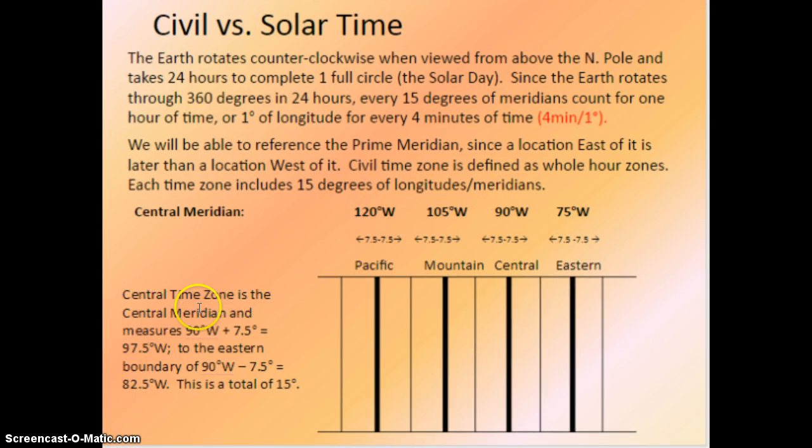Our central time zone is the central meridian, and it measures 90 degrees west. So here's our central time zone. But our entire time zone incorporates 90 degrees west, plus 7.5 to the west, and minus 7.5 degrees to the east. So really, we look at our boundaries of the central meridian as 97.5 degrees west to 82.5 degrees west, which both of these are west of the prime meridian, which is a total of 15 degrees. And that's where these 7.5 measurements come into play. Each one of these little subdivisions is 7.5 degrees.